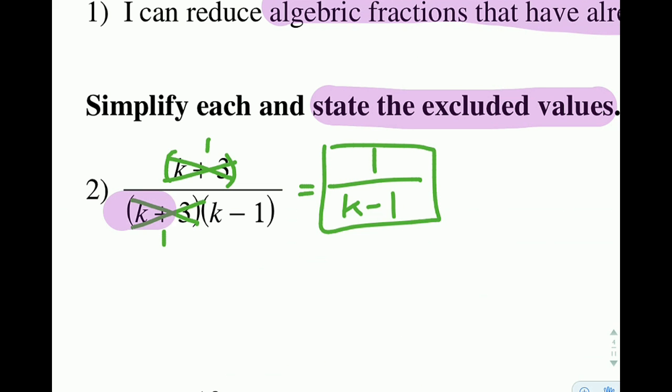You look at the original problem way back here. So to determine your excluded values, you say, what could I plug into anything in my denominator to cause it to go to 0? So in this one here, the k plus 3, if we plugged in a negative 3, that would cause a problem. If we plugged in a 1 here, that would cause a problem. We'd have 0s in the denominator and you can't divide by 0.